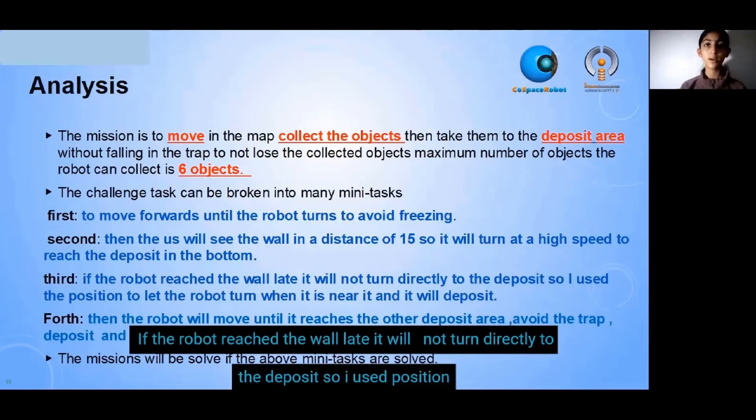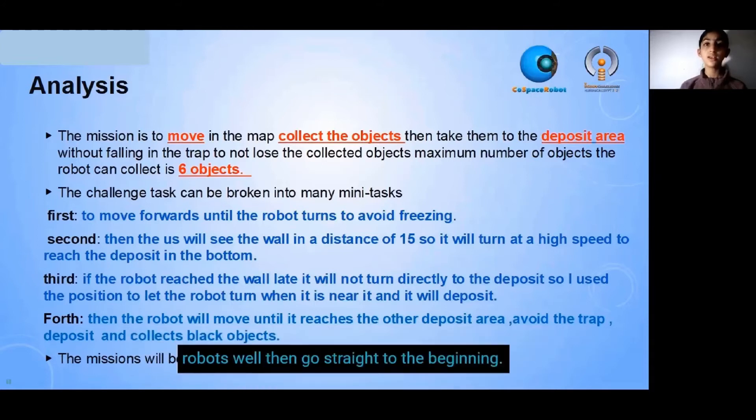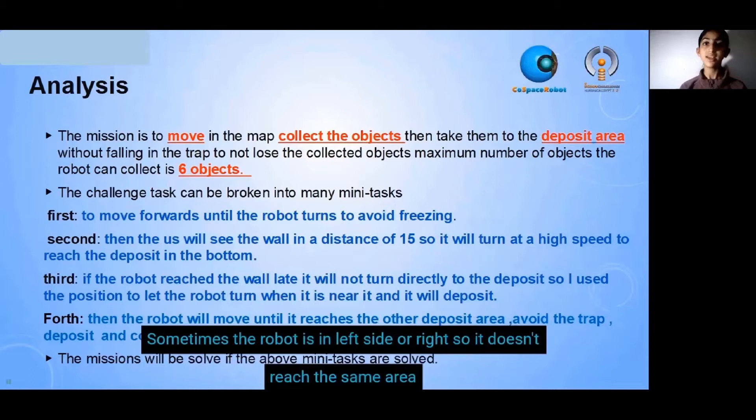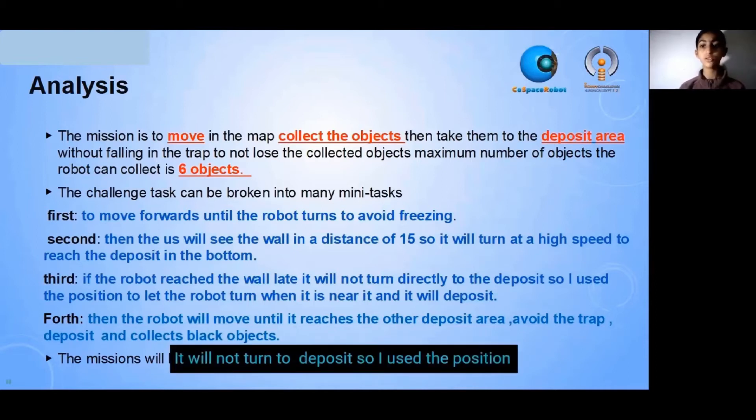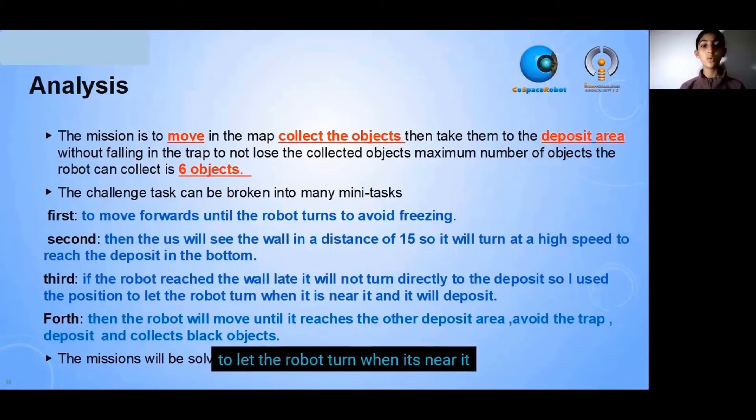If the robot reaches the wall late, it will not turn directly to the deposit. So I used the position to let the robot turn when it is near it and it will deposit.